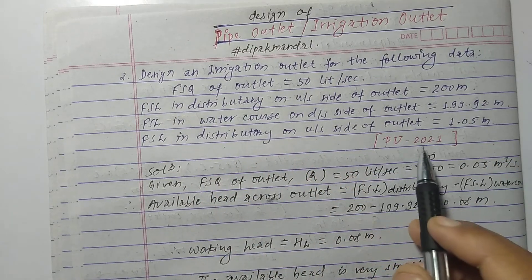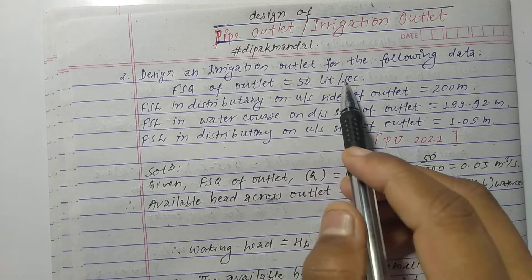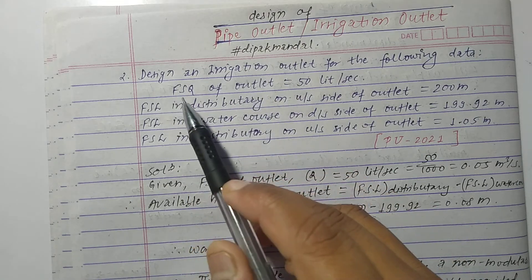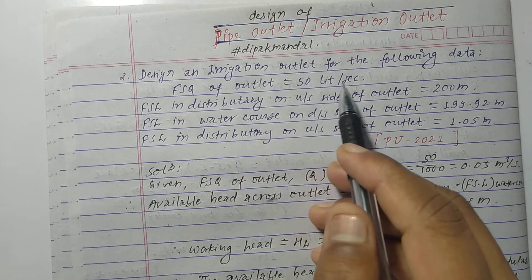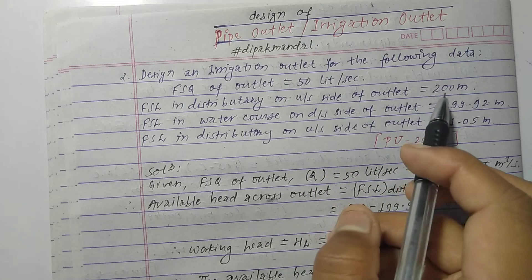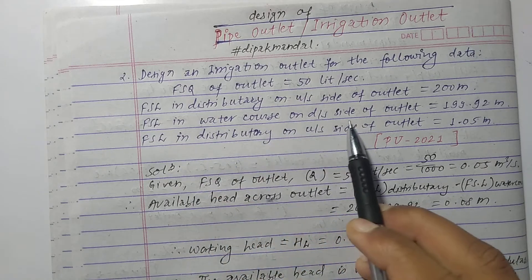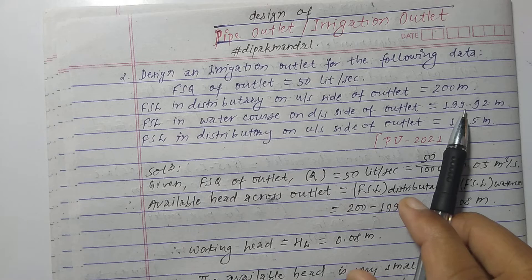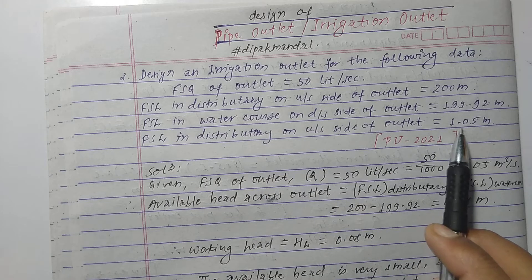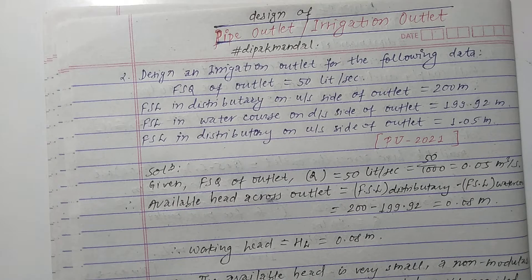This question is asked in Pokra University 2021. The question is: design an irrigation outlet for the following data. FASQ of outlet — the full supply discharge of outlet — equal to 50 liters per second. FASL in distributory on upstream side of outlet equal to 200 meters. FASL in water course on downstream side of outlet equal to 199.92 meters. And FASL in distributory on upstream side equal to 1.05 meters.